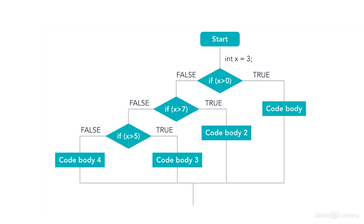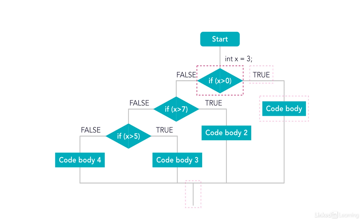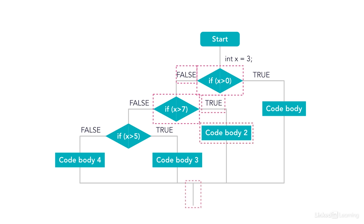Let's take a look at the flowchart. If x is greater than 10 and that is true, I will do code body one. If that is false, I will come down and test if x is greater than seven. If that is true, I will do code body two, and so on.